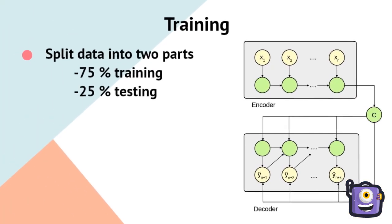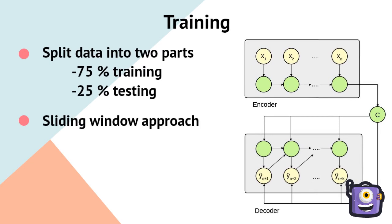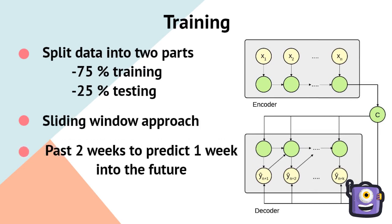We split the data into two parts: 75% for training and 25% for testing. We extract samples using a sliding window approach. We use data for the past two weeks to predict one week into the future.